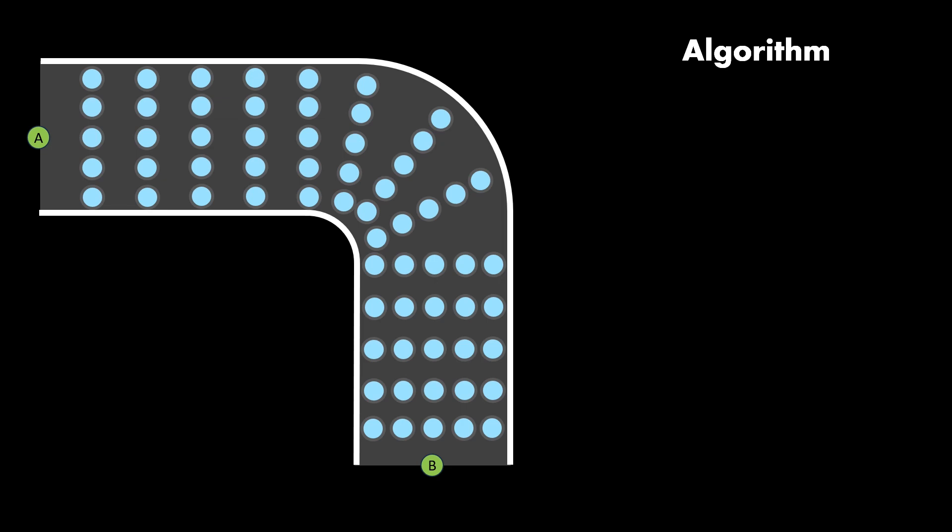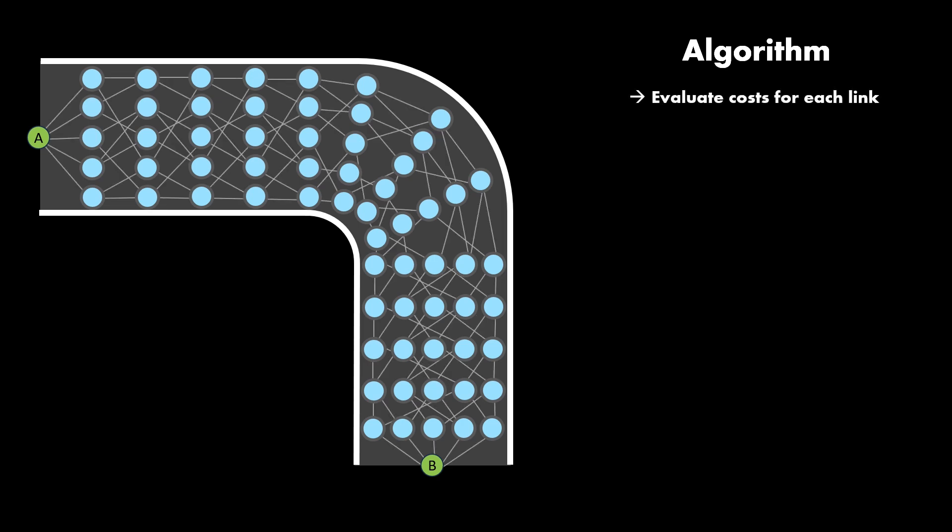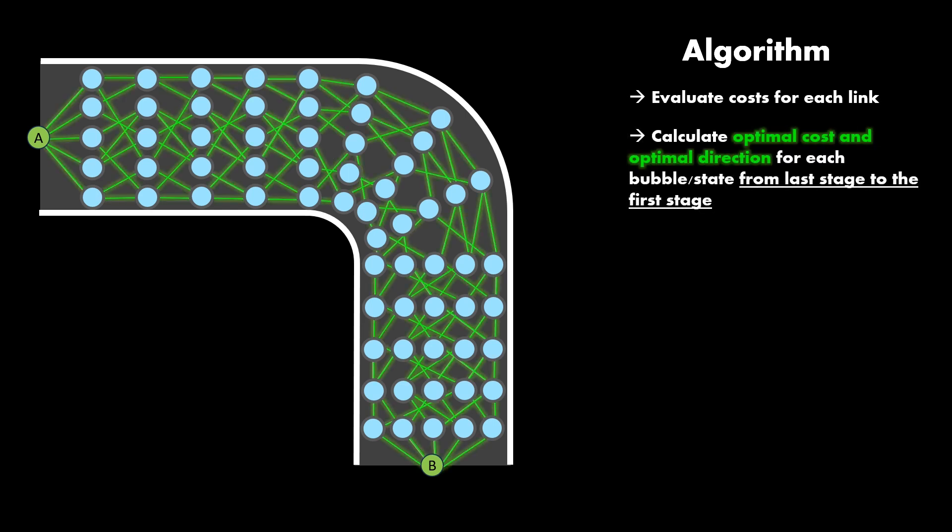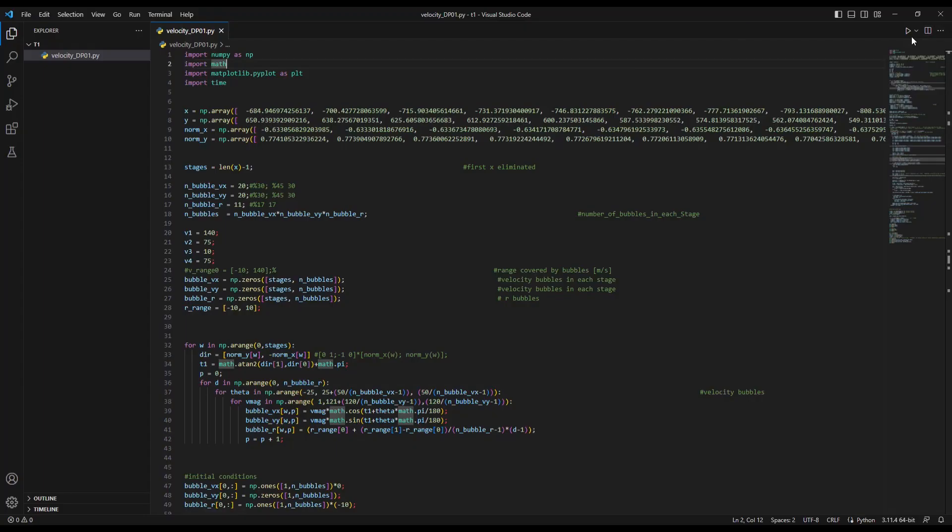Here is the summary of the algorithm we will be using. First step is evaluate costs for each link by using the equations we just discussed. Second step is to calculate optimal cost for each state from last stage to the first stage. Lastly select the most optimum path going from first stage to the last. We are going to use a Python script to solve this problem. Here is the Python script. Let us run the script.